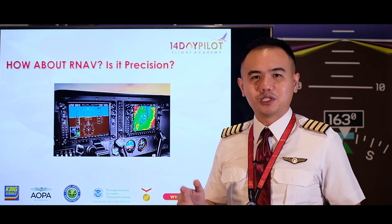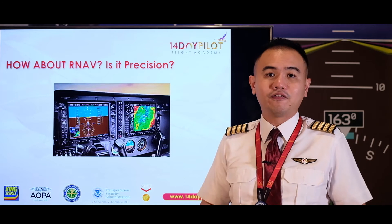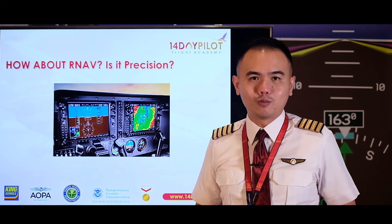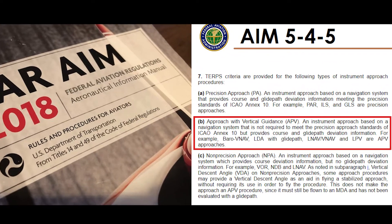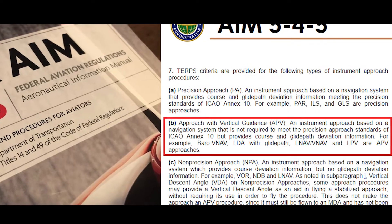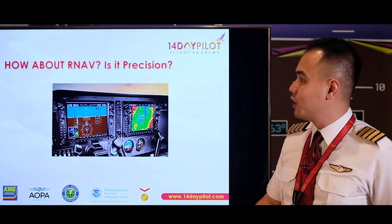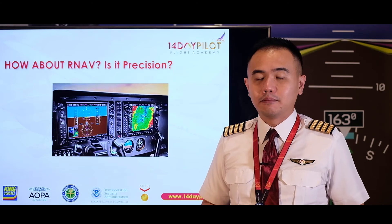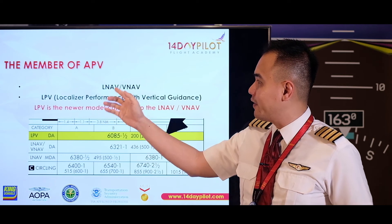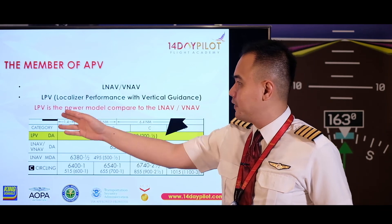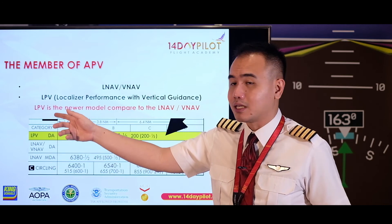How about RNAV — is it precision? This is a million dollar question. A lot of people ask whether RNAV is precision approach because when you fly LPV or LNAV/VNAV, you get vertical guidance just like a glide slope. But according to the AIM, Chapter 5-4-5, there are three categories of instrument approach, and RNAV is not a precision approach. A new category was created called APV — Approach with Vertical Guidance. Even though it has vertical guidance that looks like a glide slope, it is not a precision approach. Under APV we have LNAV/VNAV, and LPV — Localizer Performance with Vertical Guidance. LPV is the newer model, and it uses a Decision Altitude just like precision approach, but it is categorized as APV.